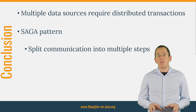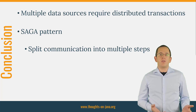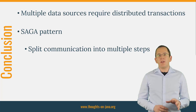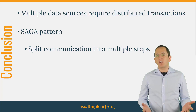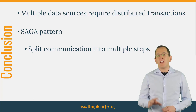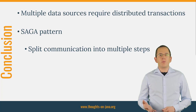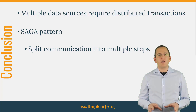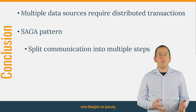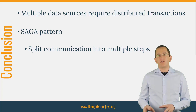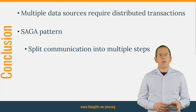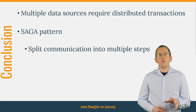Dual writes are often underestimated, and many developers aren't even aware of the potential data inconsistencies. As explained in this video, writing to two or more systems without a distributed transaction or an algorithm that ensures eventual consistency can cause data inconsistencies. If you work with multiple local transactions, you can't handle all error scenarios. The only way to avoid this is to split the communication into multiple steps and only write to one external system during each step. The Saga pattern and change data capture implementations like Debezium use this approach to ensure consistent write operations.